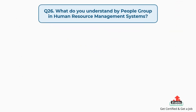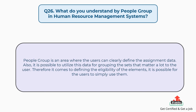Question number 26: what do you understand by people group in human resource management systems? The answer is, people group is an area where users can clearly define the assignment data. It is also possible to utilize this data for grouping the sets that matter most to the user, therefore it helps in defining the eligibility of elements.